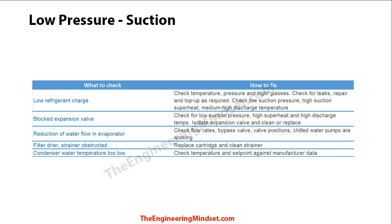Low suction pressure could also be caused by reduced water flow into the evaporator, so check all valves, bypass valves, and pumps. Refer to commissioning data if you're unsure of the correct flow rate. Also check the filter dryer and strainer for blockages, and clean or replace them as needed. The condenser water temperature being too low can also cause this — adjust bypass valves around the cooling towers to ensure water returns at the correct temperature.